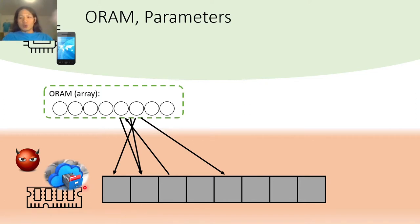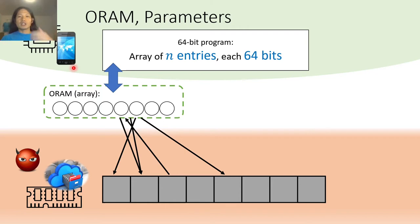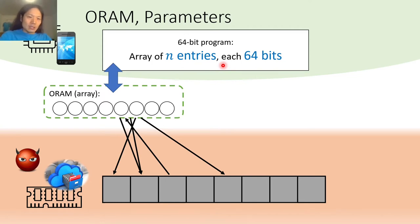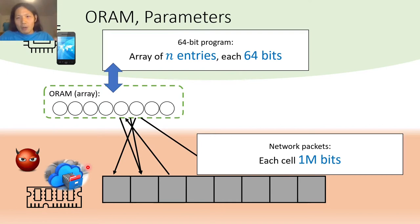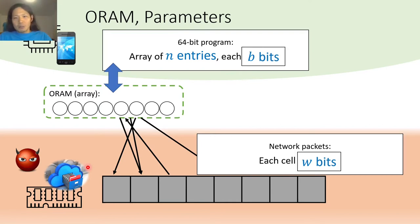Coming back to the data outsourcing scenario: we have a client that wants to run some program written in 64 bits, so our ORAM wants to simulate an array of N entries. Each entry has 64 bits, but the server speaks in network packets — each network packet may be a million bits. So we have memory cells of a million bits in size. Alternatively, the adversary can be eavesdropping a hard drive where the block size is 1 megabit. This introduces two extra parameters: the entry size B and the cell size W. In some scenarios the cell size equals the entry size, but the cell size can also be a million times greater than an entry.